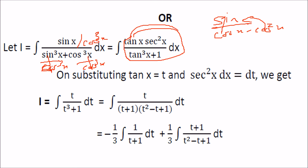Now we put tan x equal to t, so dt equals sec²x dx. This substitution gives us t by t³ plus 1. We factor t³ plus 1 using the sum of cubes formula: t³ plus 1 equals (t plus 1)(t² minus t plus 1).